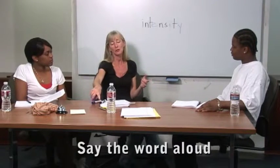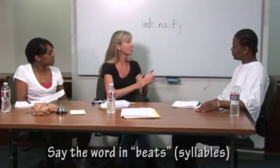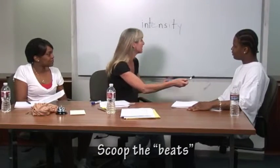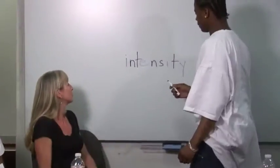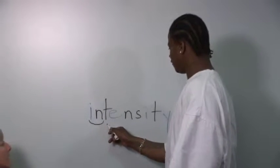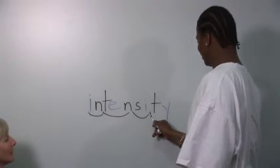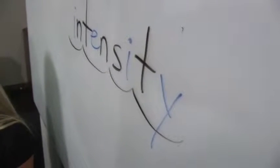Now remember how I was talking to you earlier about saying words in beats. A beat is like a syllable — you can clap it or just say it. Let's clap it together. Let's do intensity and clap each beat when we say it. Ready? Intensity. How many beats? Four. Four beats. Kendall, do me a favor and scoop the beats in that word — read it one beat at a time and scoop those beats for us. In. In. Tin. Tin. C. T. Intensity. Excellent. Four beats.